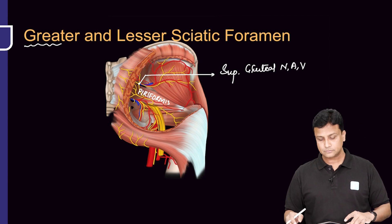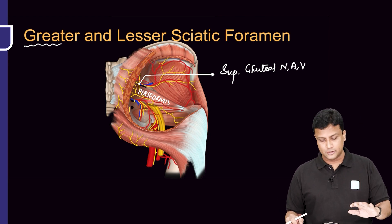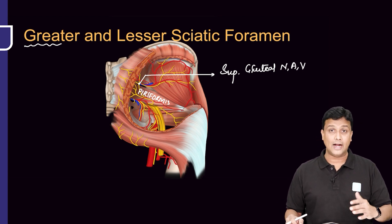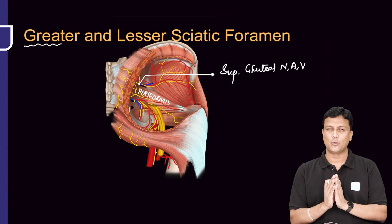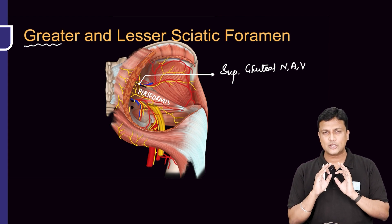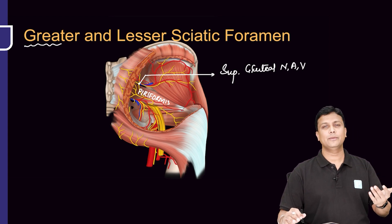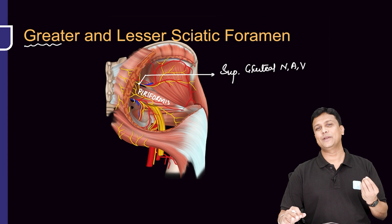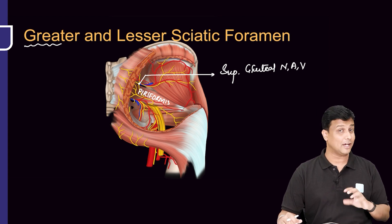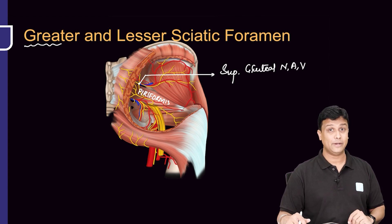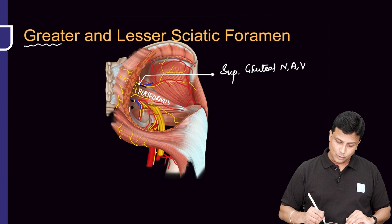So there will be superior gluteal nerve, superior gluteal artery, as well as vein passing from above the piriformis. It is such an easy thing to remember — it is just above the piriformis. Please remember: superior gluteal nerve, artery, and vein are going to pass above the piriformis.